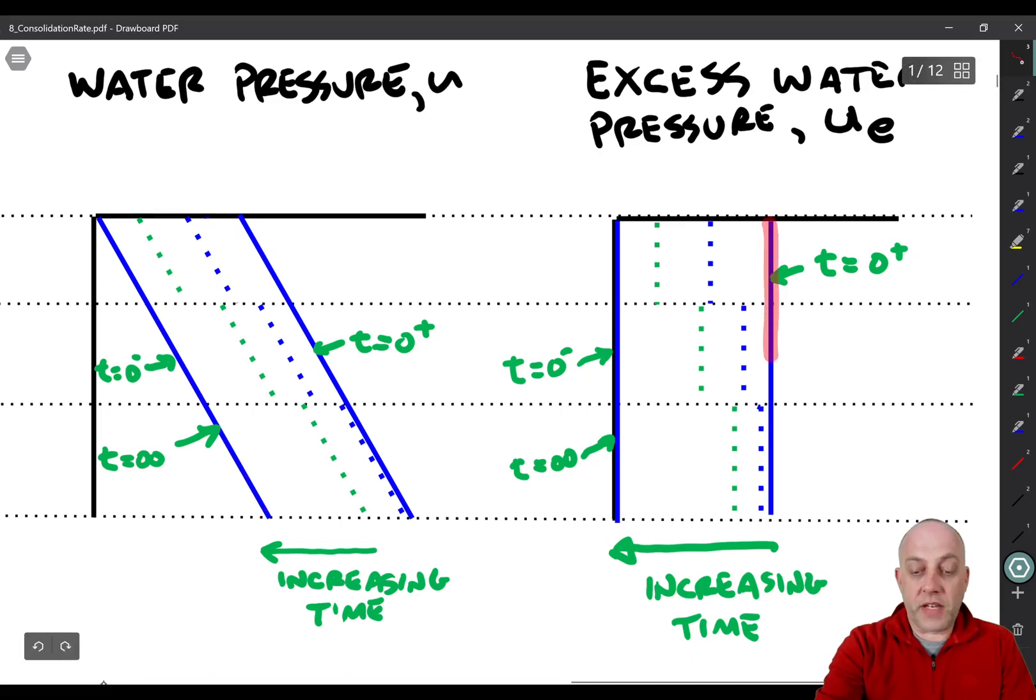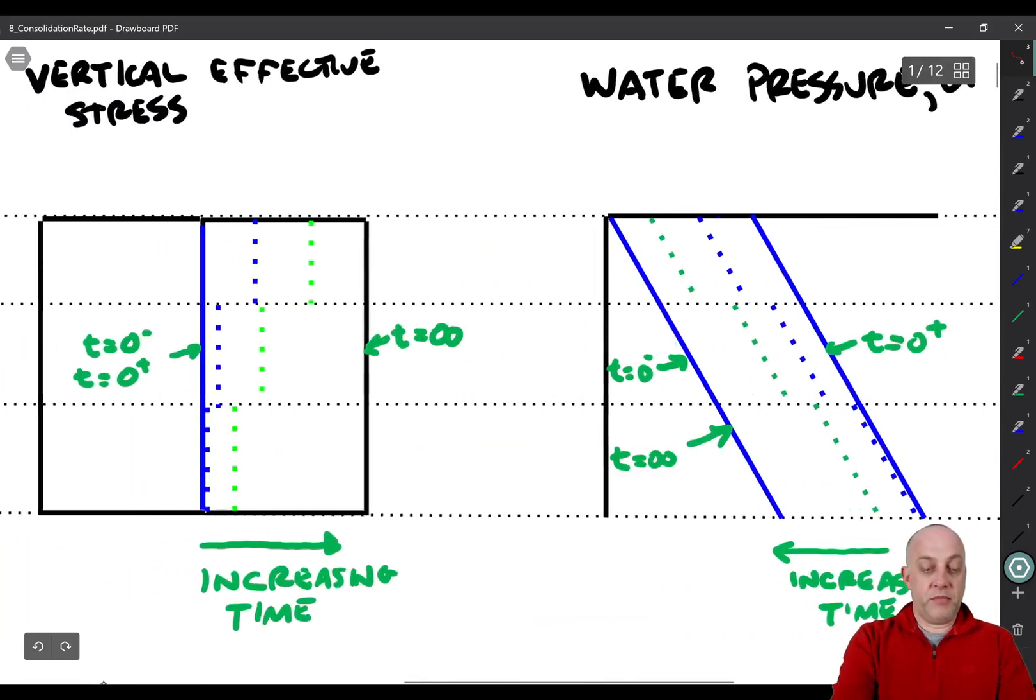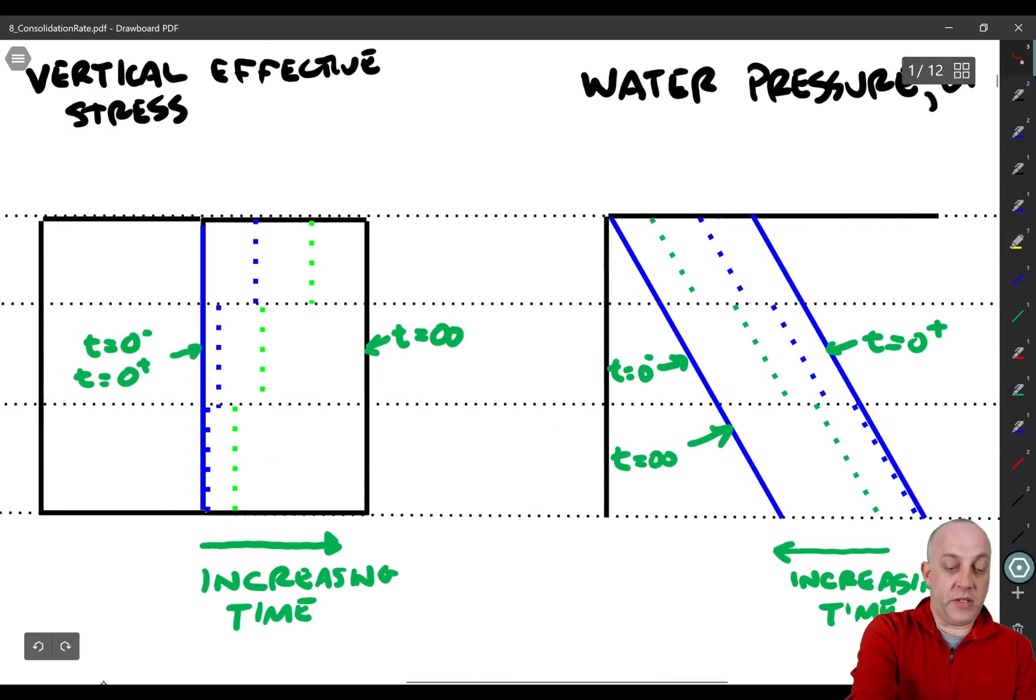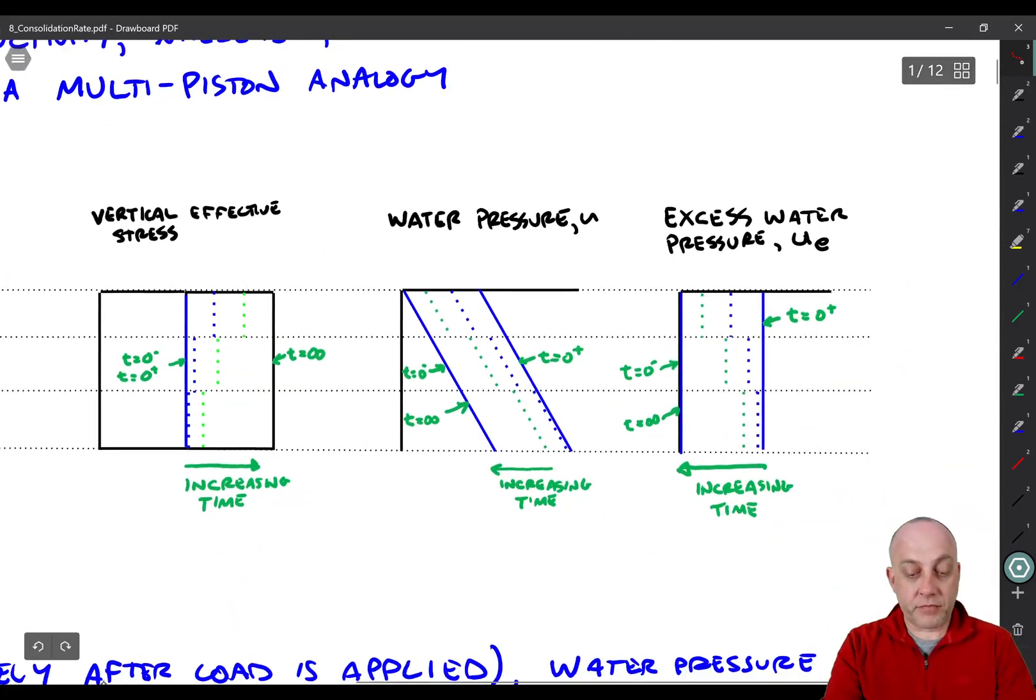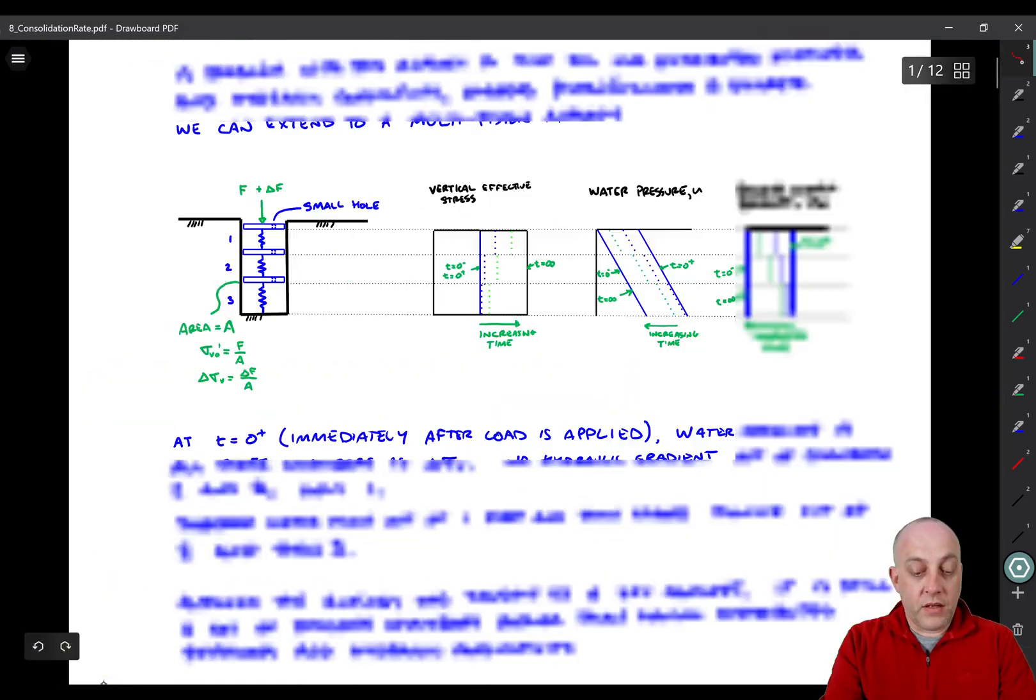If we look at it in terms of excess pressure, we start there. Same thing, though, we dissipate through chamber 1 first, and then chamber 2, and then chamber 3. Similarly, the effective stress increases first in chamber 1, then in chamber 2, and then in chamber 3. And over time it increases with that same ratio. Eventually, all of them go back to being, all of them will go to the final vertical effective stress right there.